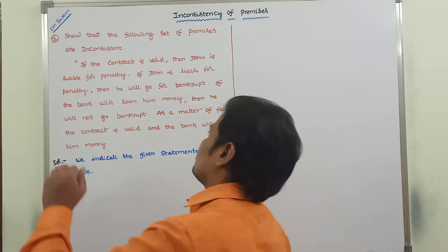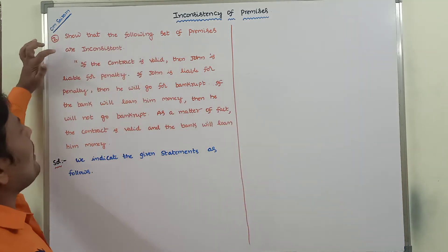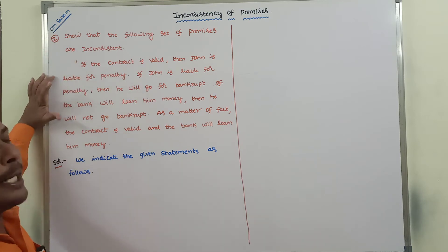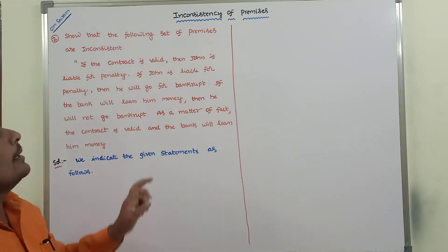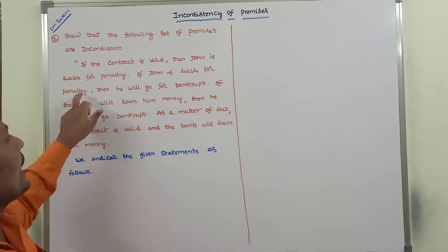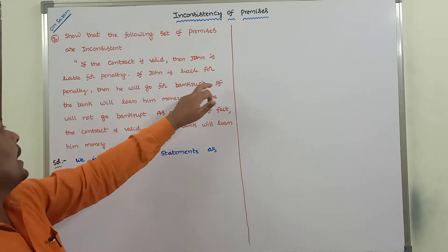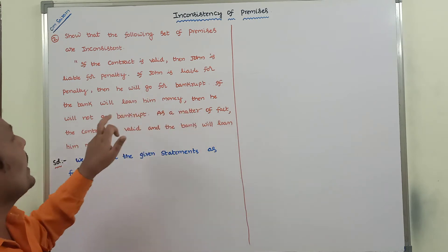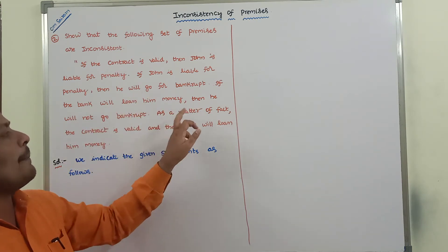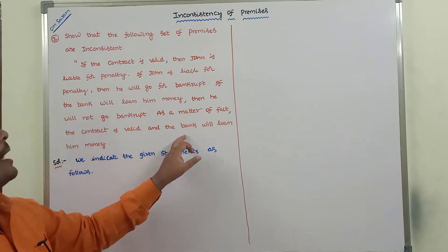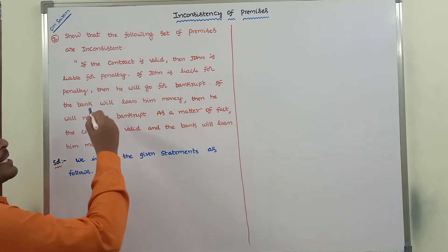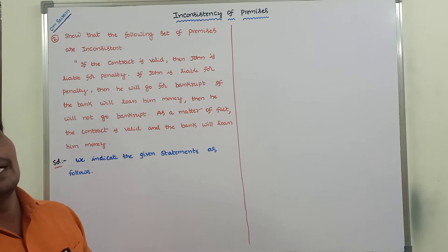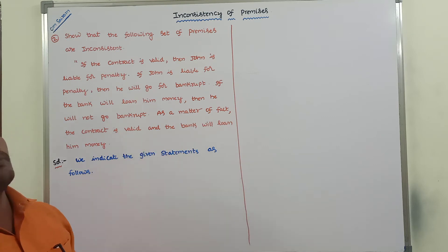Now, show that the following set of premises are inconsistent. The given statements are: if the contract is valid, then John is liable for penalty. If John is liable for penalty, then he will go for bankrupt. If the bank will loan him money, then he will not go for bankrupt. As a matter of fact, the contract is valid and the bank will loan him money. From these given statements, we have to write the premises and verify that the given premises derive a contradiction or not.